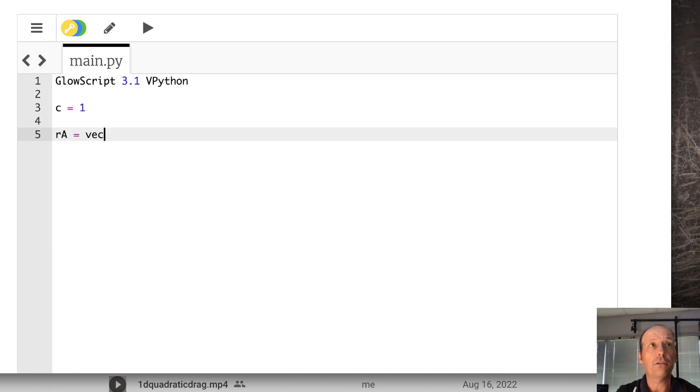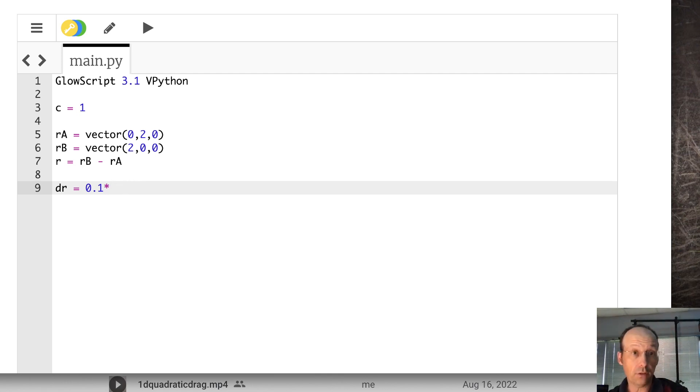Switching to Python. This is GlowScript. Let's say c equals 1. I need to start with my position vector r. Ra is vector (0, 2, 0), that's the location of A, going straight up. And rb is the vector (2, 0, 0), going straight that way. Then I can say rl is going to be rb minus ra. Now let's say dr, let's do this in one step. How far do I want to go? Let's say 0.1 meters times the direction, which is going to be equal to norm rl. That's my r hat. So now I have dr as a vector. That's delta r.